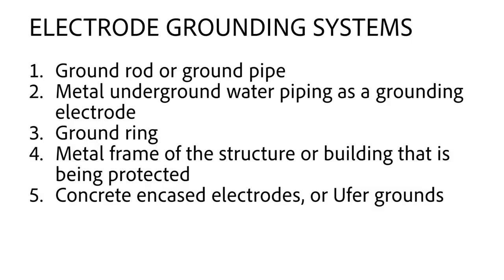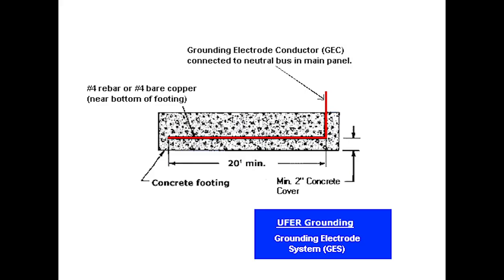In regards to the next method, which we also mentioned in our last video, the use of concrete encased electrodes or Ufer grounds are also acceptable. In order for this type of electrode to meet NEC standard it must be encased in at least two inches of concrete and that concrete should have direct soil contact. Also, the electrode should be located near the bottom of the concrete foundation and the conductor should be no less than 20 feet long and no smaller than four gauge wire.